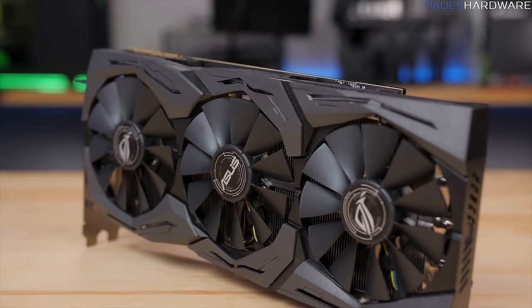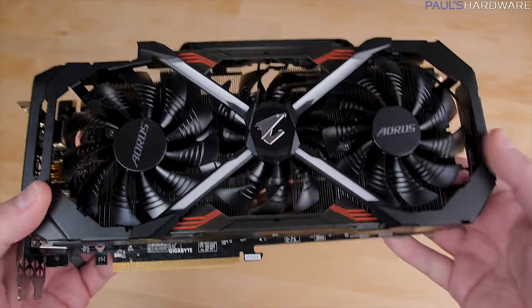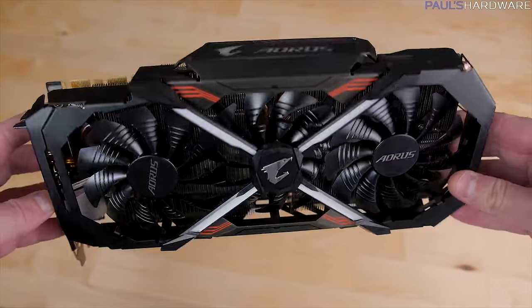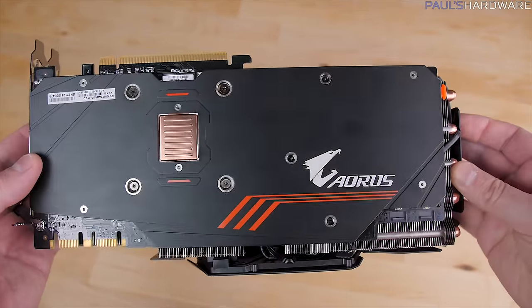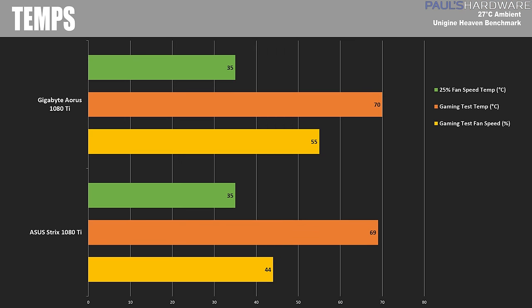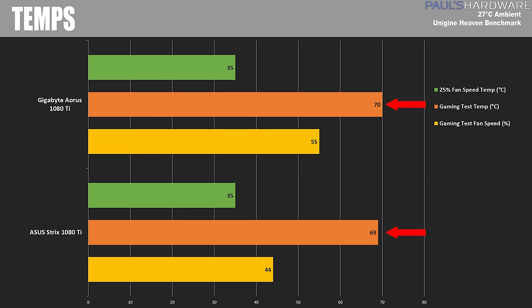Those tests might make it seem like the Strix is the louder card, but remember I'm using percentages of the maximum fan speed — the Strix fans max at about 3900 RPM whereas the Aorus goes up to 2900. So in that 75% test the Strix was at 2750 RPM, the Aorus was only at 2175. While actually under a normal gaming load, the Asus Strix fan speed topped out at about 44%, 1592 RPM, and the Aorus fan speed hit 55%, but also about 1585 RPM. At that speed noise level was down to about 41 dBA and very quiet for both cards. The cooling comparison was also a wash, with both cards performing within about a degree of each other — both are good coolers.